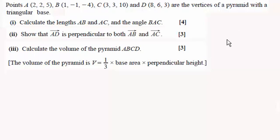The base of the pyramid is going to be ABC and the vertical height is going to be the vector AD. I know that because in part two we had to show that AD was perpendicular to both AB and AC.